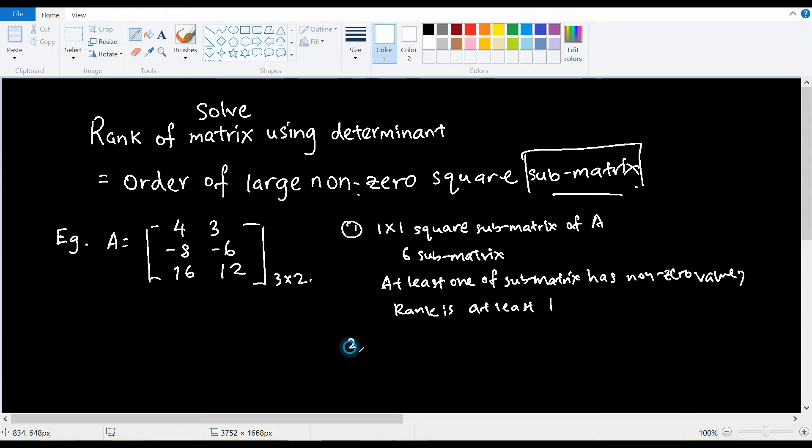So the next thing that we will focus on is the 2 by 2 square submatrix of A. In this case we have two 2 by 2 submatrices, and the condition is that at least